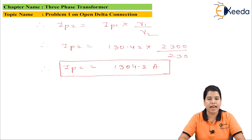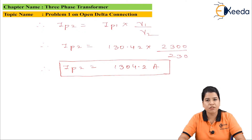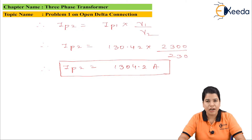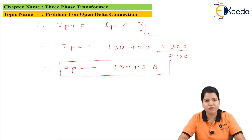The transformers were initially connected in delta-delta, but one transformer was removed, so the connection is now open delta. When operating in open delta, the current must not exceed the values already calculated. Therefore, IP1 and IP2 represent the currents that can be safely carried, and we have found their values.